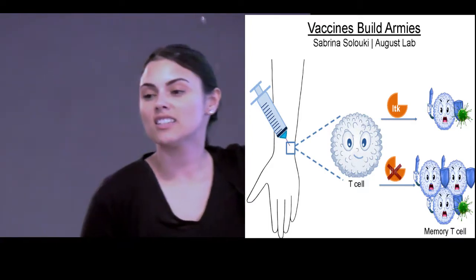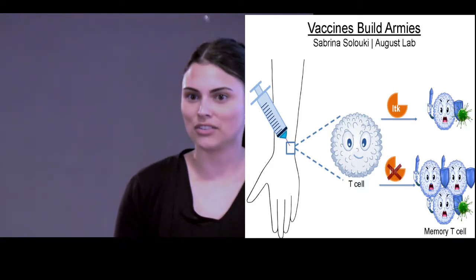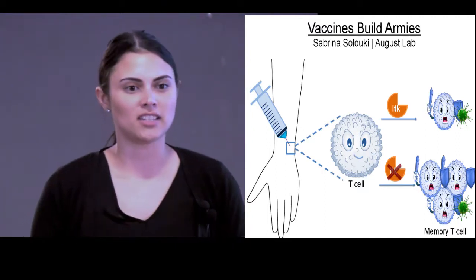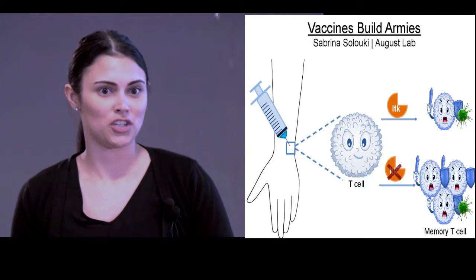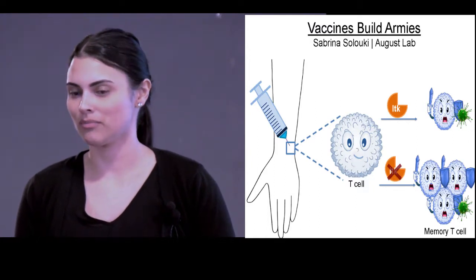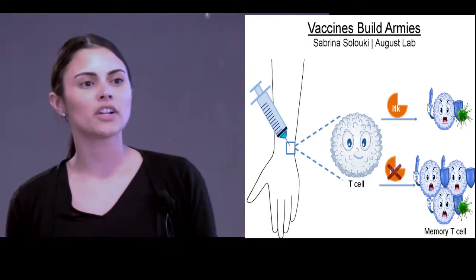If we zoom in, you can see that some of these soldiers are known as T-cells. However, for a vaccine to be effective, these T-cells need to equip themselves with the proper weapons to engage in combat against these microbes. So as they gather their swords and shields,